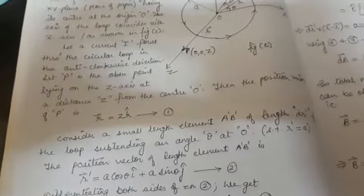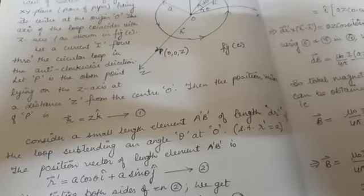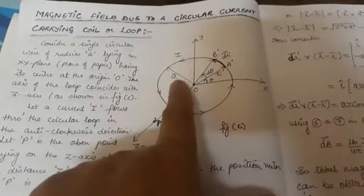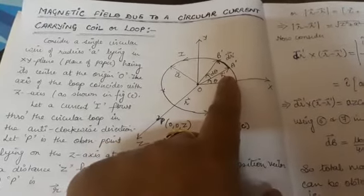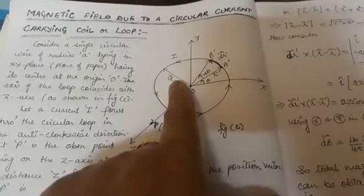Let current I flow through the circular loop in the anticlockwise direction. Let P be the observation point on the z-axis at distance z from center O. Then the position vector of P, R vector, is z·k̂. The length element A'B' of length dR' subtends angle θ at O, such that the magnitude of OA' vector equals the radius A. So R' = A.